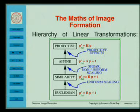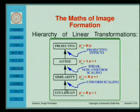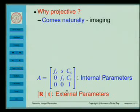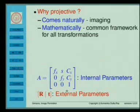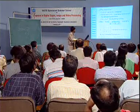Now we know the basics of image formation — basically how an image is formed. One of the things we try to do now is to understand what limits today's image sensors and using today's image sensors, how can we get something more out of them. Why do we consider projective images? Because it comes naturally — that is the way lenses are built. Mathematically it gives a common framework for all transformations.